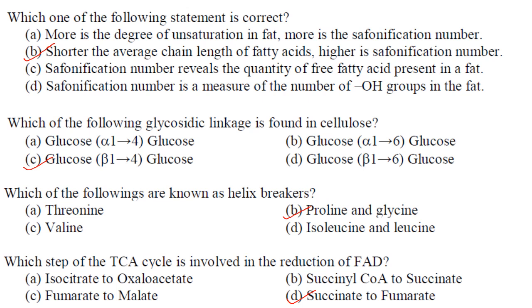Which step of the TCA cycle is involved in the reduction of FAD? This question has been repeated in many MSc entrance exams. The answer is succinate to fumarate, where FAD is reduced to FADH₂ by the action of the enzyme succinate dehydrogenase. Answer is option D.